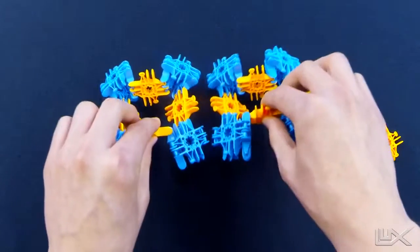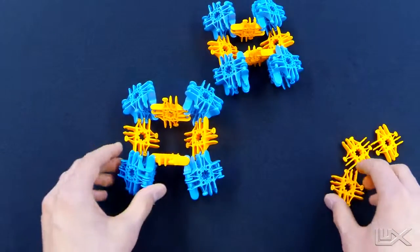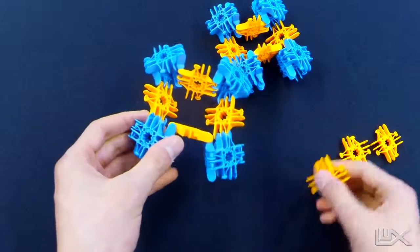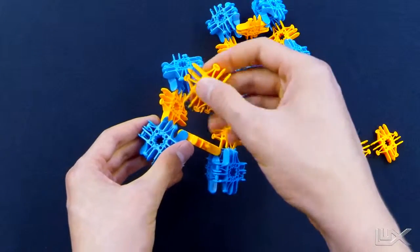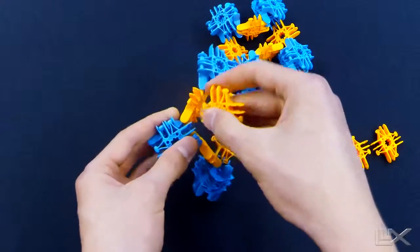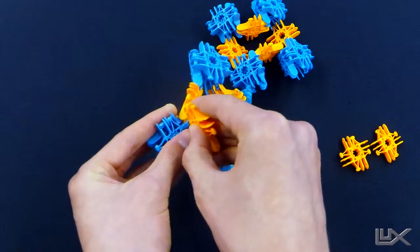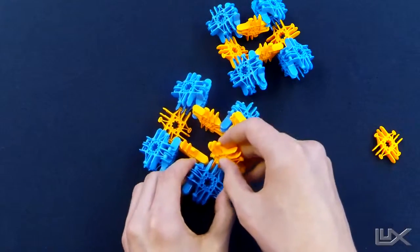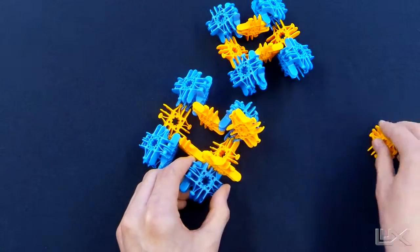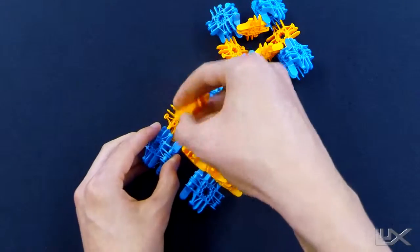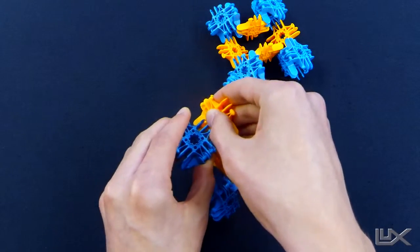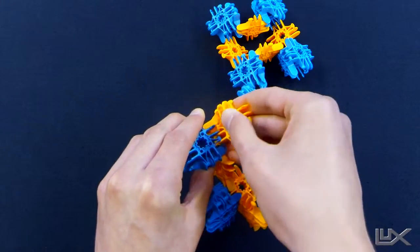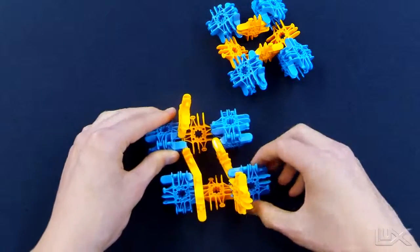We have two of the same here. What we're going to do is take this one and snap an orange piece onto each side so they're sticking upright. Need one more.